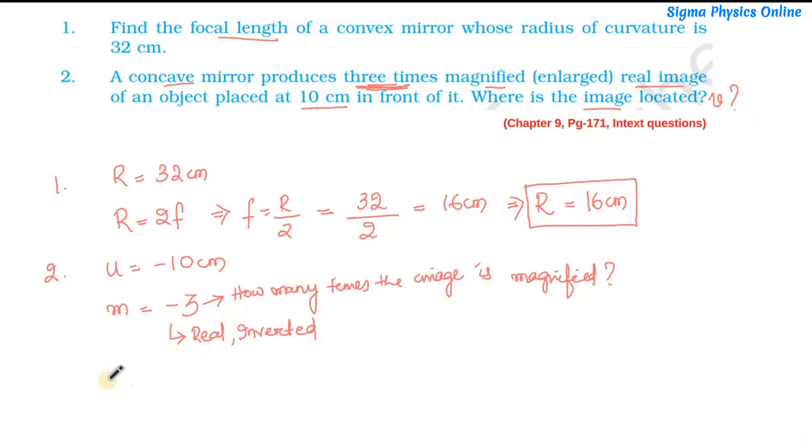Now let's solve for the image distance. The magnification formula for a mirror is given by M equals minus V by U, where V is the image distance and U is the object distance. We'll substitute the values of M and U to get the value of V.